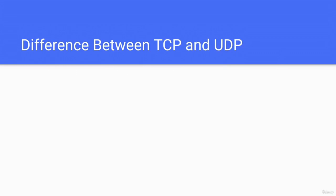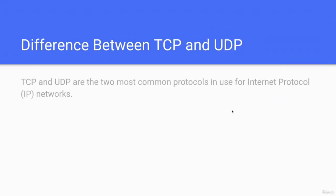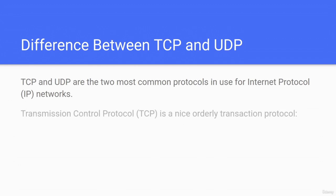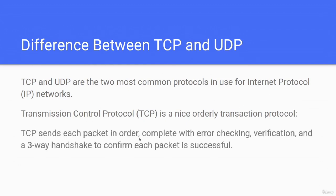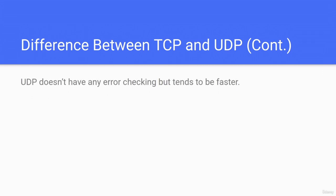What is the difference between TCP and UDP? TCP and UDP are the two most common protocols used for IP networks. TCP, or Transmission Control Protocol, is an orderly transaction protocol. TCP sends each packet in order, complete with error checking, verification, and a three-way handshake — SYN, SYN-ACK, and ACK — to confirm each packet is successful. UDP doesn't have any error checking but tends to be faster.